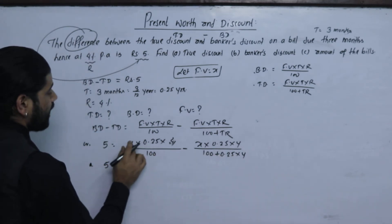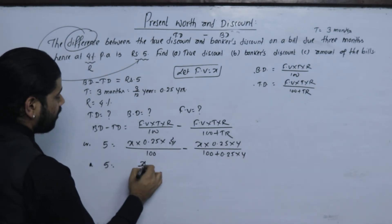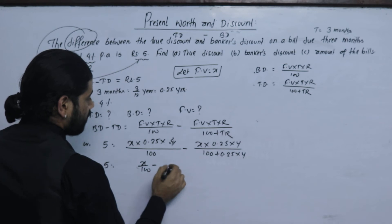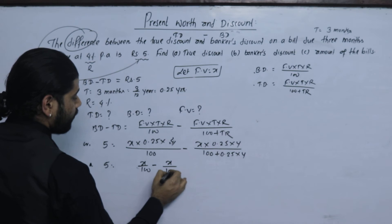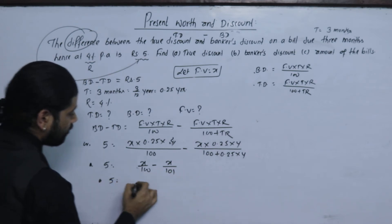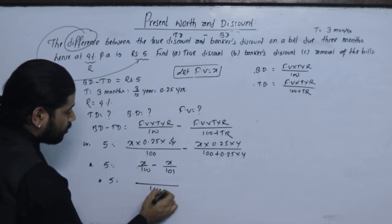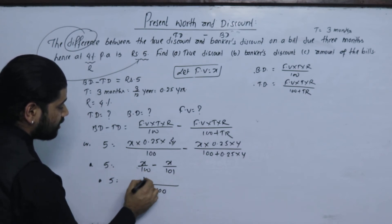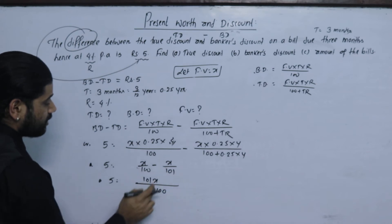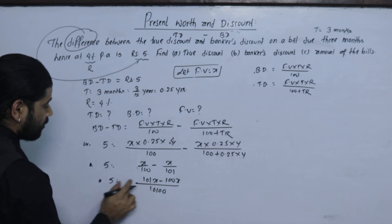So 5 equals x into 0.25 into 4 upon 100, divided by (1 plus 0.25 into 4 upon 100). Simplifying: 0.25 into 4 equals 1, so denominator becomes 1 plus 1 upon 100, which is 101 upon 100. After cross multiplication, 5 into 101 equals 100x minus 100x... solving gives 100x equals 5 into 101.